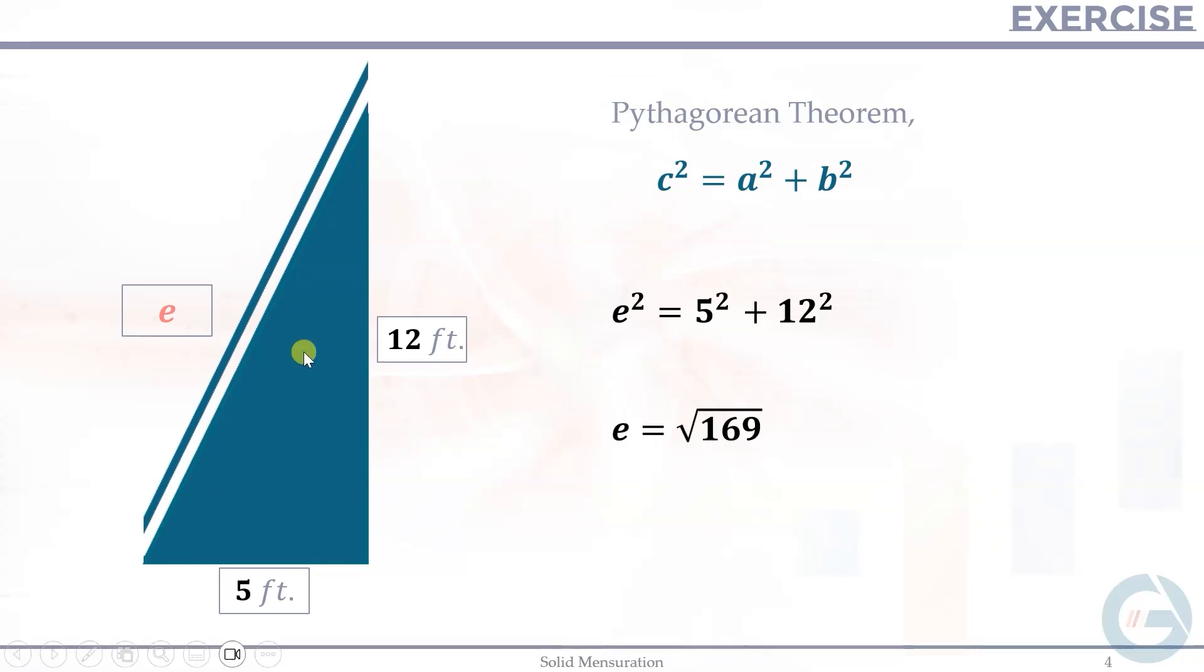So transfer the squared to the right side. So this becomes square root. So the length of the pipe is square root of 169, or that is equivalent to 13 feet. This length now is given by 13 feet.